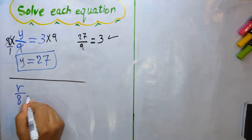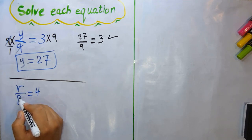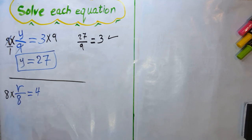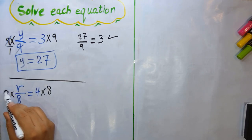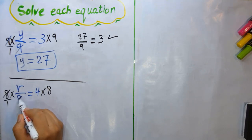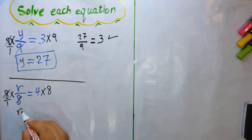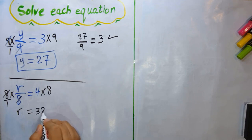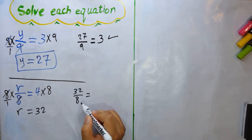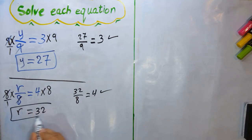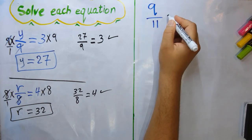Next: r/8 = 4. The relation between r and 8 is divide. To remove divide, we multiply both sides by 8. Writing 8 as 8/1, we cancel 8 up with 8 down, leaving r on the left. On the right: 4 × 8 = 32. So r = 32. Check: 32 ÷ 8 = 4. Correct!